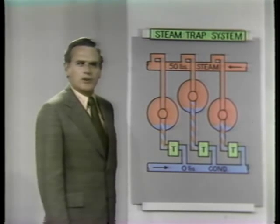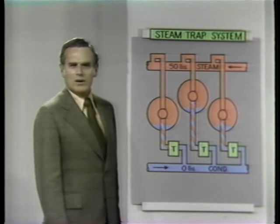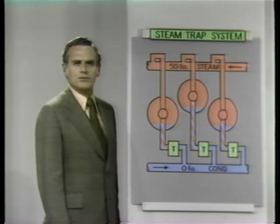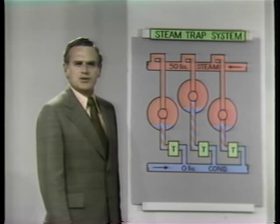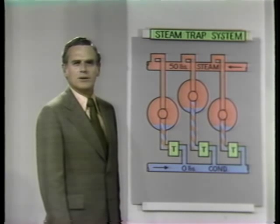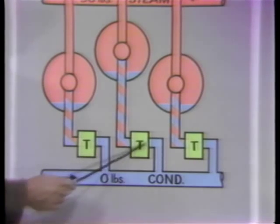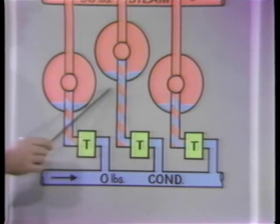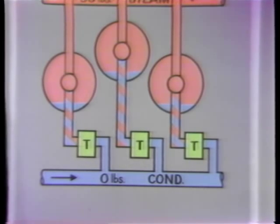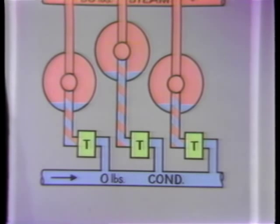The function of any steam trap in draining steam-heated equipment is to allow condensate and non-condensables to pass through the trap into the return piping without loss of live steam. Traps automatically discharge condensate as fast as it is formed. Therefore, trapping each individual dryer on a machine allows each dryer to be drained of condensate independently of the other dryers, regardless of their individual condensing rates. The traps provide independent condensate drainage control for each dryer.